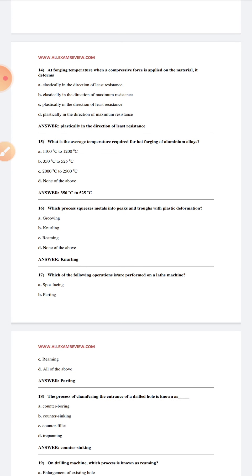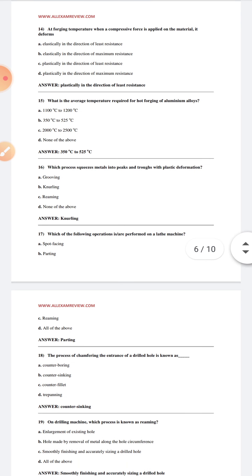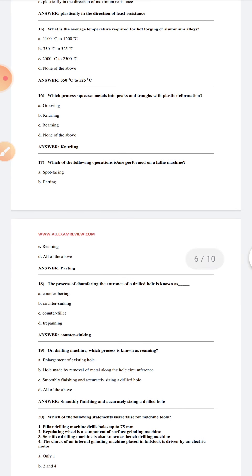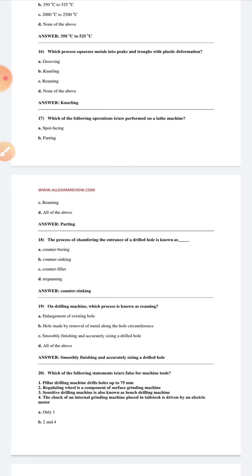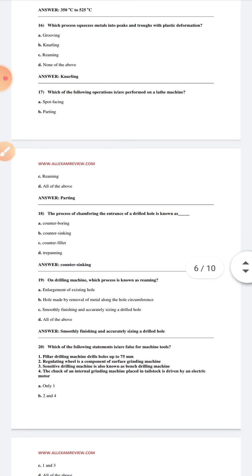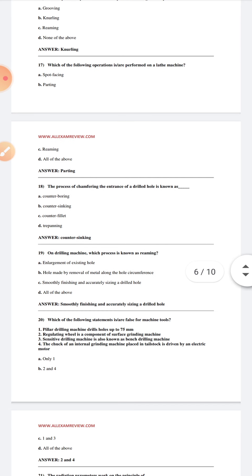Which process extrudes metals into different shapes in plastic deformation? Knurling. Which of the following operation is performed on the lathe machine? Parting. The process of chamfering the entrance of a drilled hole is known as countersinking on drilling machine. Which process is known as reaming? Smooth finishing and accurately sizing a drilled hole.